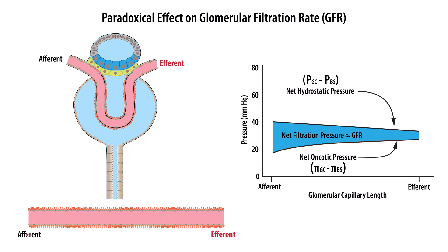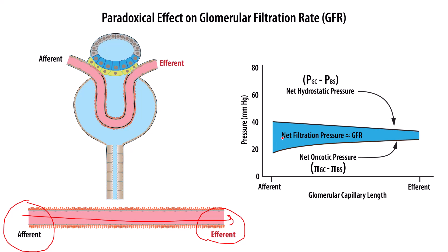Here we have our afferent arteriole, our capillary, and our efferent arteriole. Blood flows in this direction. We're going to use this illustration to show what's going on with the paradoxical effect. On the x-axis we have glomerular capillary length, and we look at what happens to hydrostatic pressure as we move fluid from the afferent arteriole through the capillary and out the efferent arteriole. Our two main forces are hydrostatic pressure and oncotic pressure.